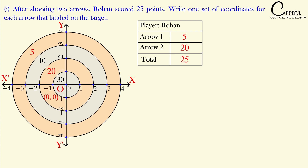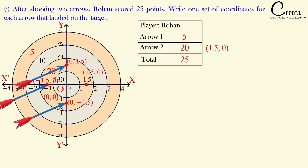Let's take the 20-point zone first. Suppose the arrow landed at the center of the zone, between radii 1 and 2. For example, at a distance of 1.5 from the origin along the x-axis, with y-coordinate 0. So the coordinate is (1.5, 0). The arrow may have landed anywhere in this zone — we just need to give one valid coordinate. We've chosen (1.5, 0) for simplicity.